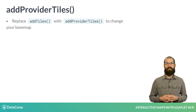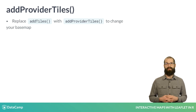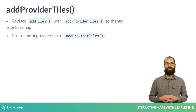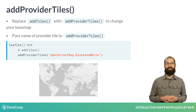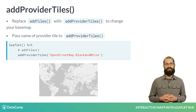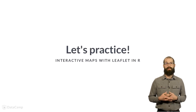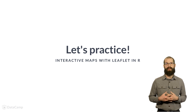We can swap the default base map out for any of the included provider tiles using the addProviderTiles function. For example, to create a leaflet map that uses the black and white OpenStreetMap, we replace addTiles with addProviderTiles and pass in the name of the desired tile to the function. Now it's time to put this into practice using the CartoDB provider tiles.